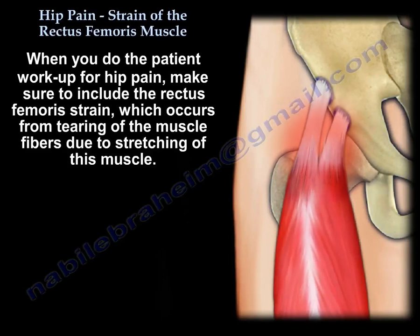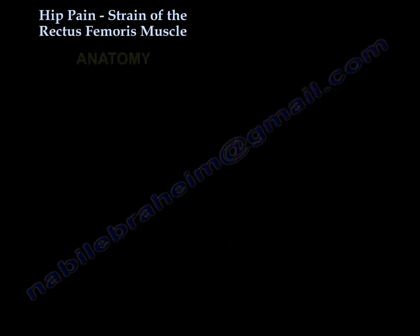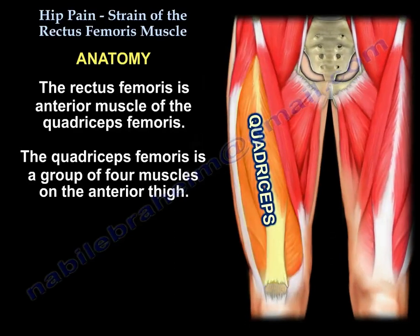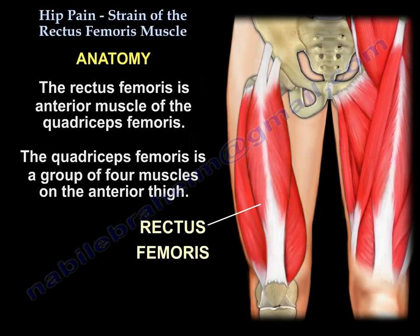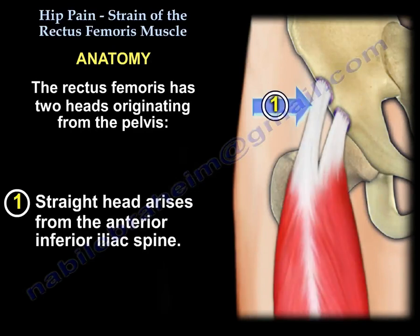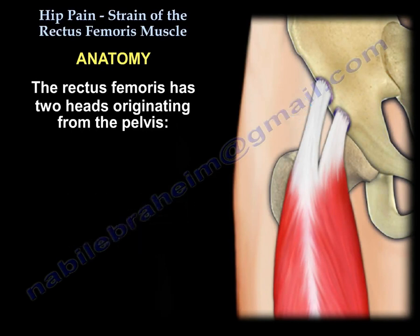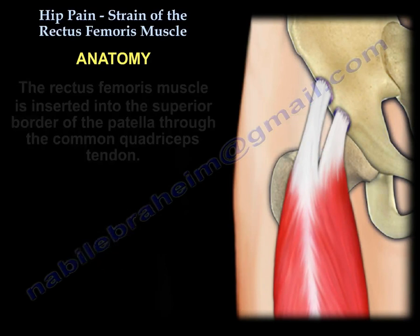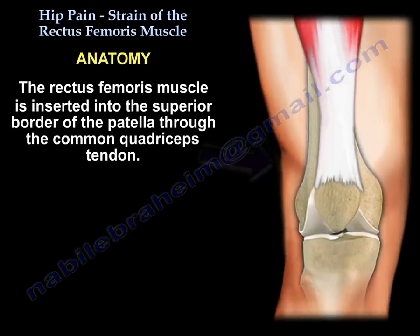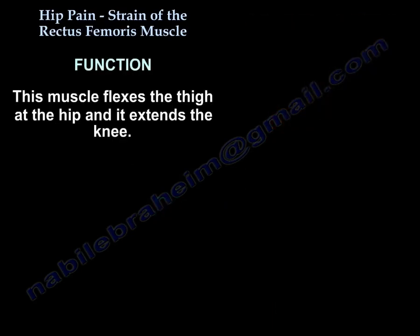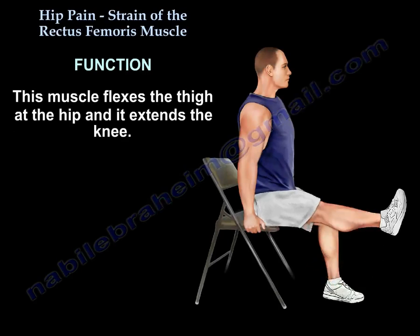Rectus femoris strain occurs from tearing of the muscle fibers due to stretching. The rectus femoris is the anterior muscle of the quadriceps femoris, a group of muscles in the anterior thigh. It has two heads: the straight head arises from the anterior inferior iliac spine of the pelvis, and the reflected head originates from a groove superior to the acetabulum. The muscle inserts into the superior border of the patella through the common quadriceps tendon, and functions to flex the thigh at the hip and extend the knee.